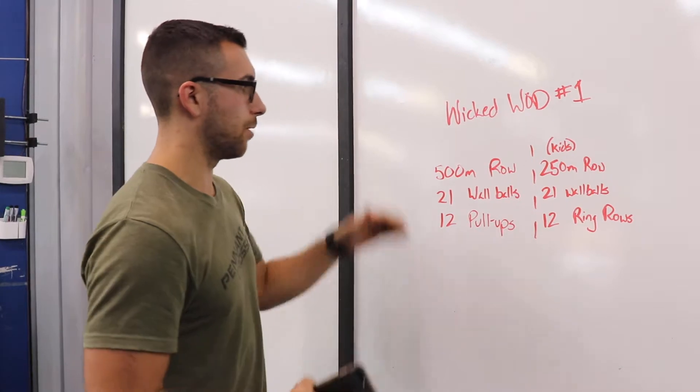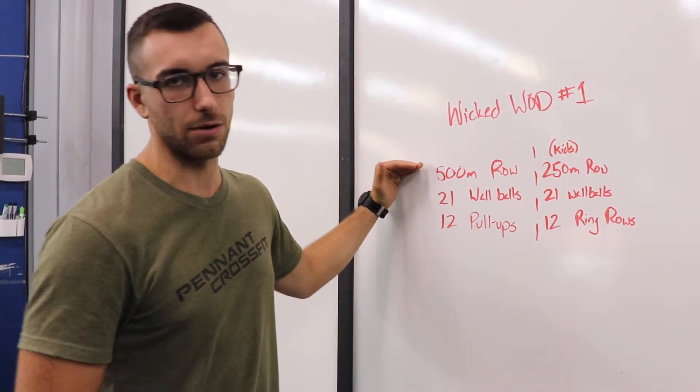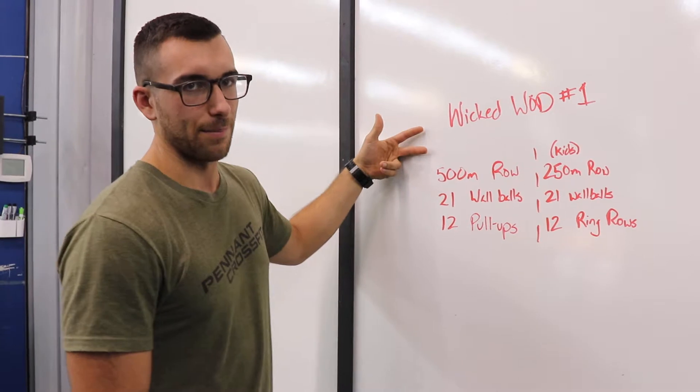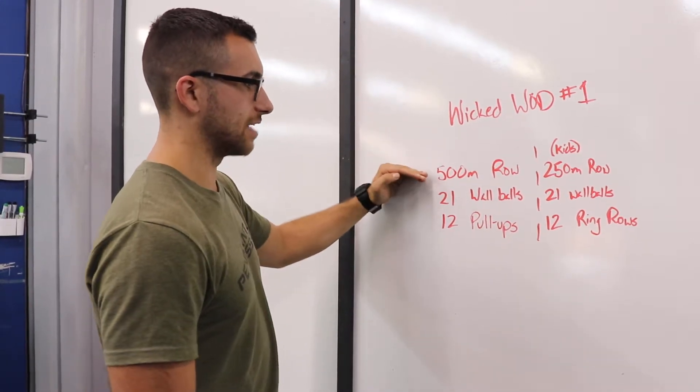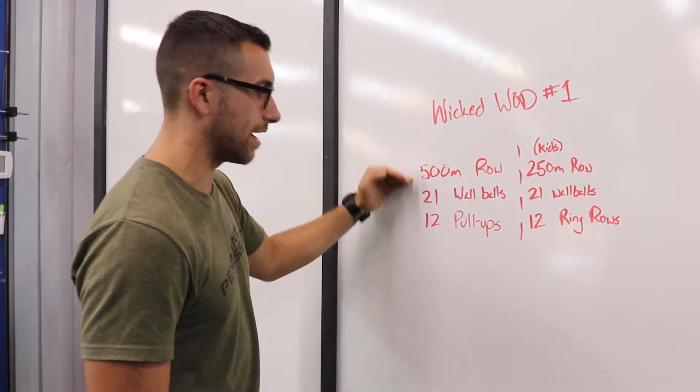We're doing it gauntlet style, so partner one starts with that 500 meter row. Partners two and three will be waiting behind. Once partner one finishes that 500 meters, they're gonna go right into the 21 wall balls.